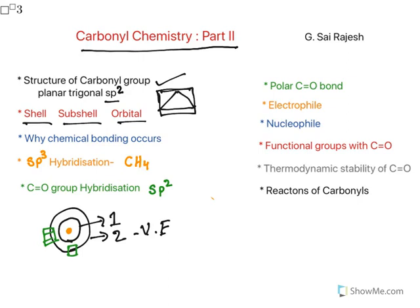The subshells are S and P. In the S subshell you have one orbital, whereas in the P subshell you have three orbitals. In the case of D there are five orbitals, and in the case of F there are seven orbitals.